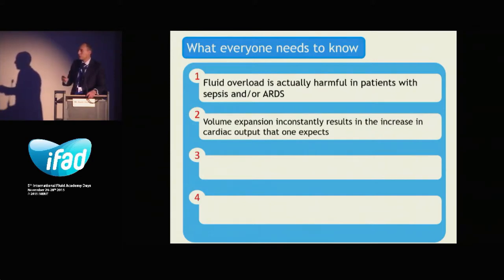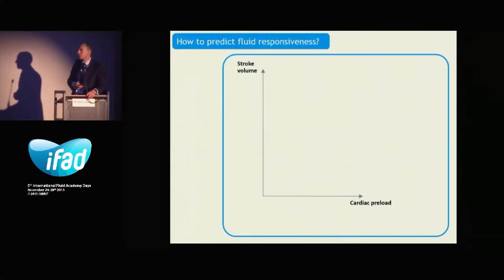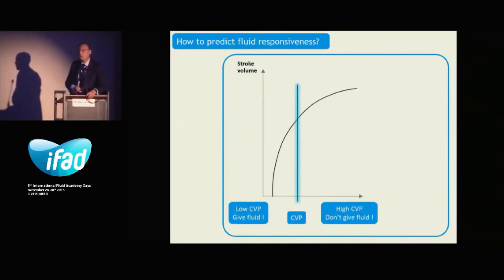The next logical question is how to predict fluid responsiveness. The wrong way was used for many years — and you know that the wrong way, at least in my mind, was to use central venous pressure. The idea was quite simple: if CVP is low, give fluid; if CVP is high, refrain from fluid administration.